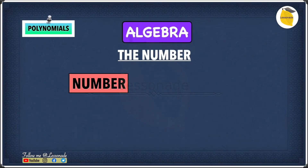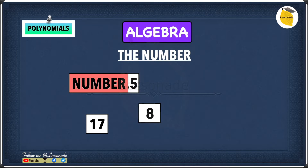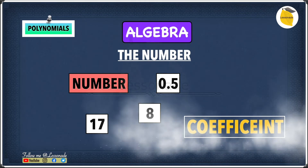The number part can be anything — it can be 17, 8, or even 0.5. There is a specific name that we call the number part: the coefficient.